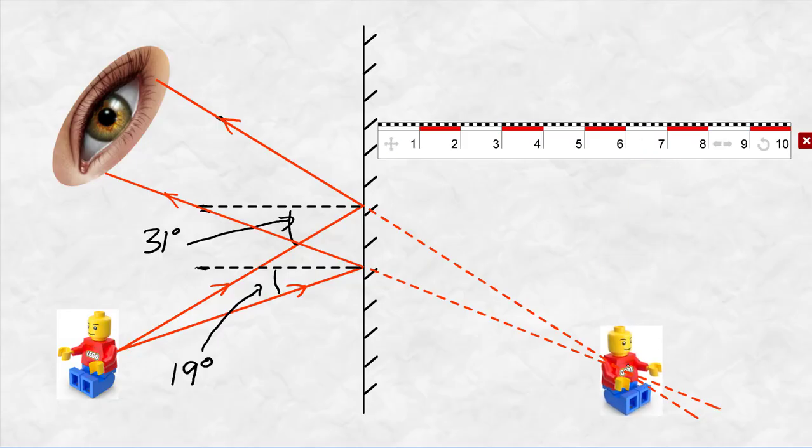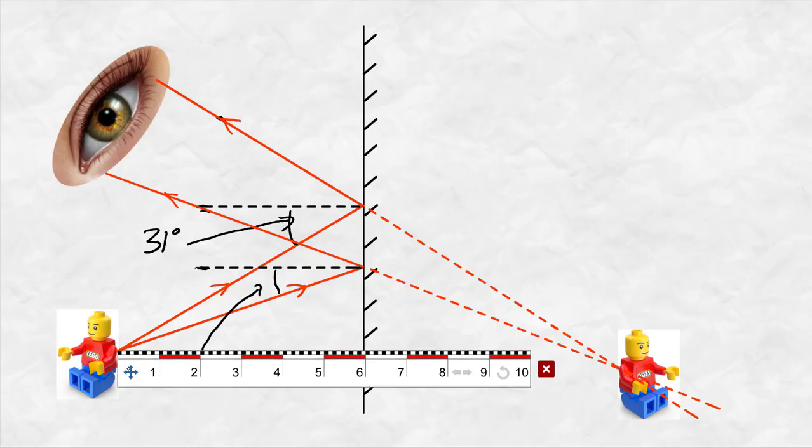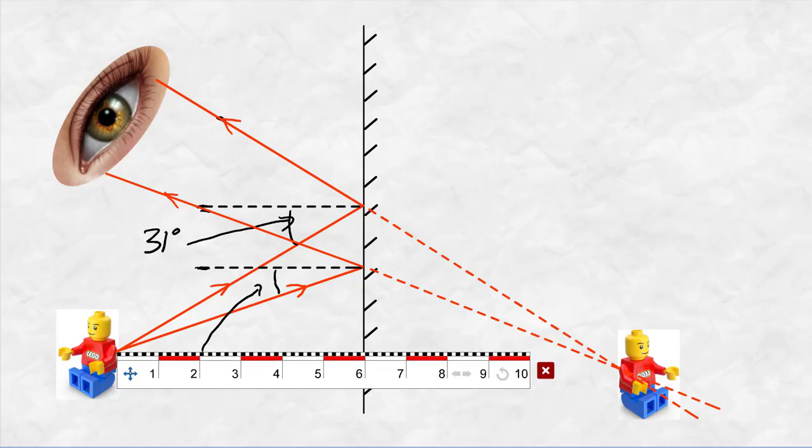Now if I come along and measure the distance from my object to the mirror, that's 6 centimeters. And if I've done this accurately, when I measure the distance from the mirror to the image, that will also be 6 centimeters.